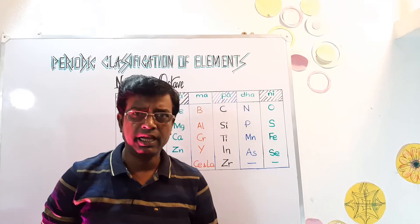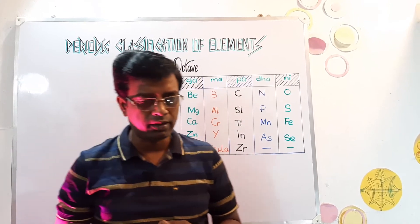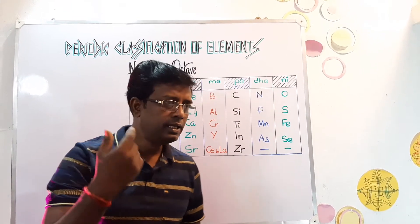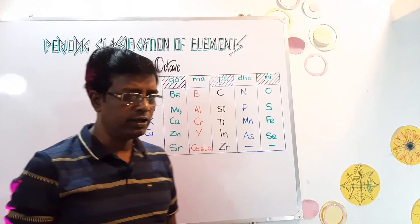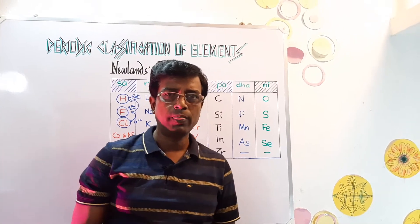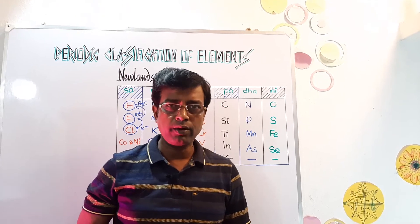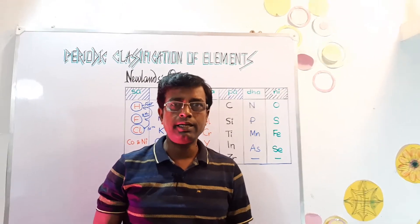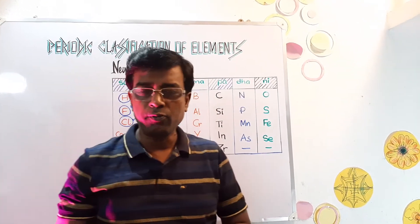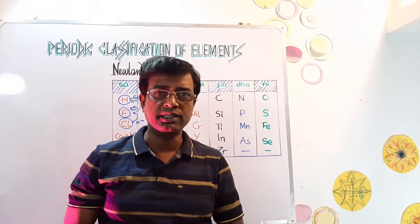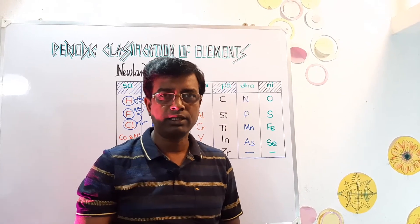At this time 56 elements were known and Newland, the biggest drawback, one of the biggest drawback of Newlands octave is that he said that only 56 elements are there in this universe and no more elements would be discovered in near future. But we know now there are 118 elements and he didn't fit, didn't left any gap in his table. So that in near future if any elements would be discovered would be put into that table. He could not do that.